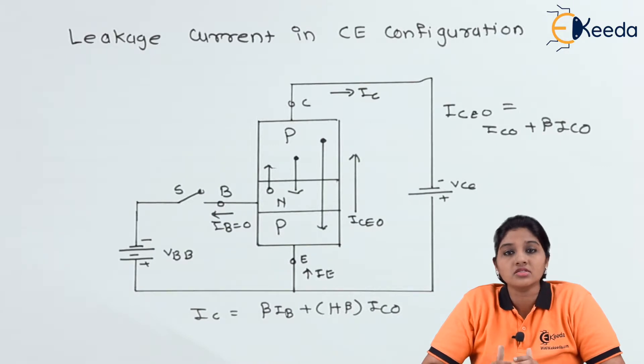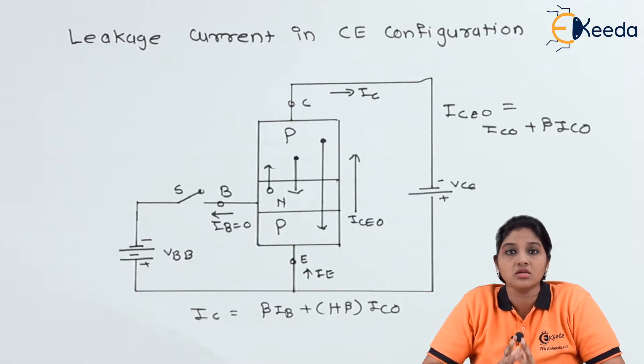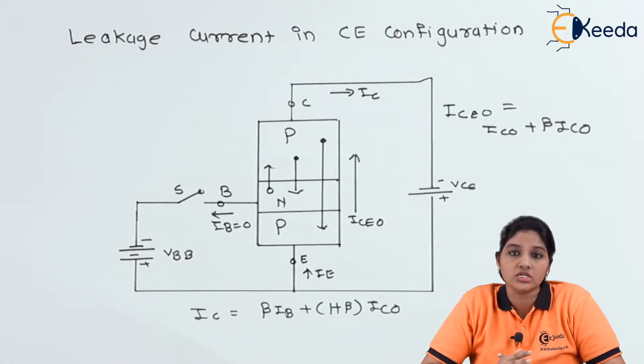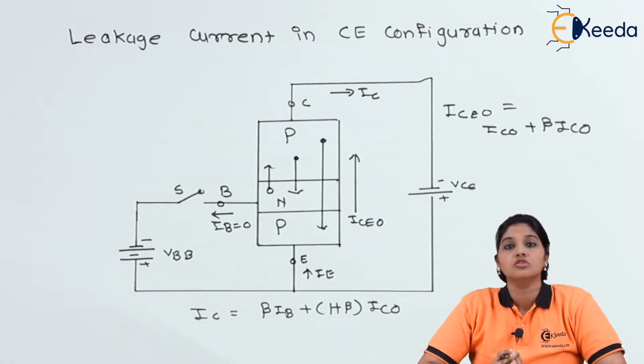Let's understand the operation of the transistor in two conditions — that means when switch S is open and when switch S is closed. So let's look at the diagram.